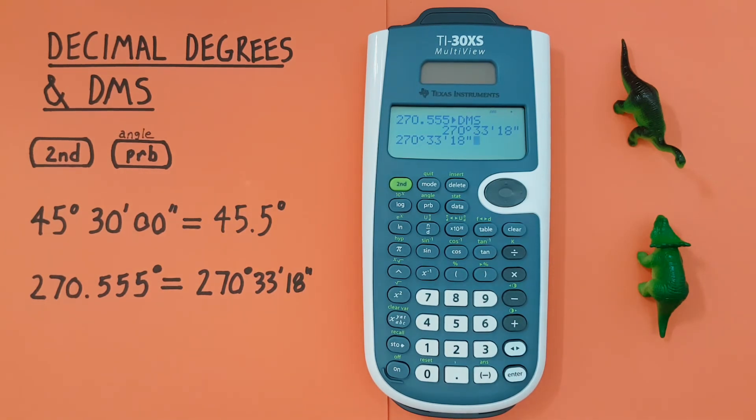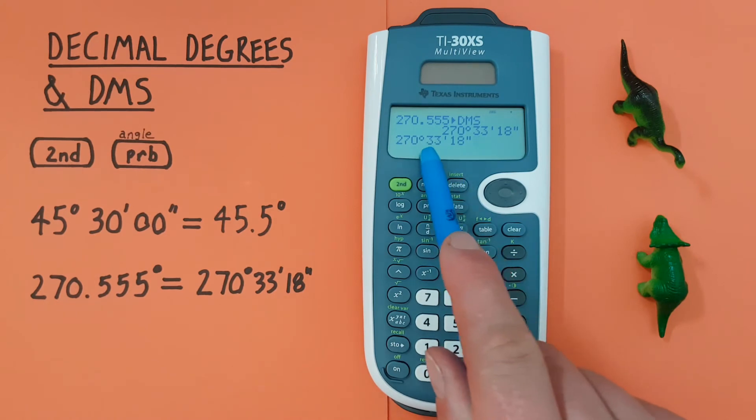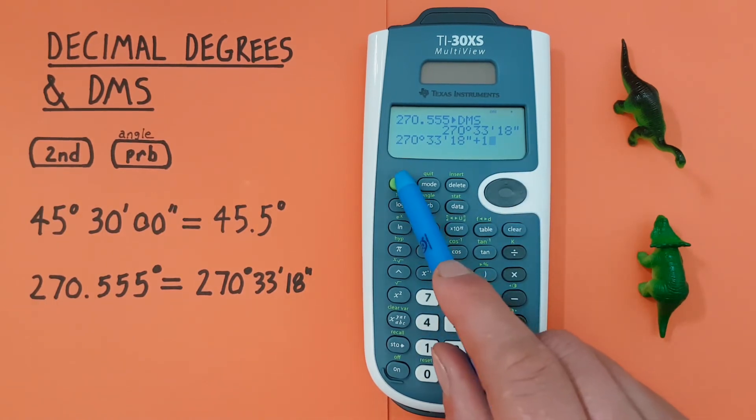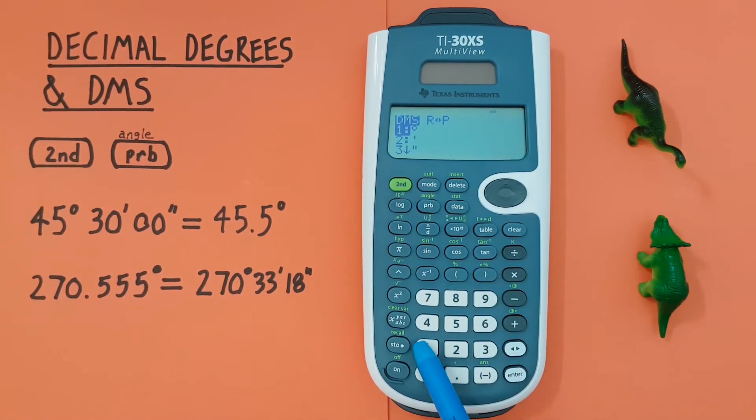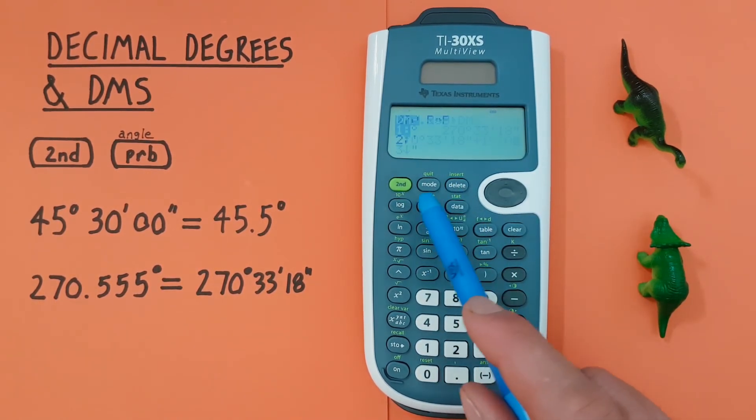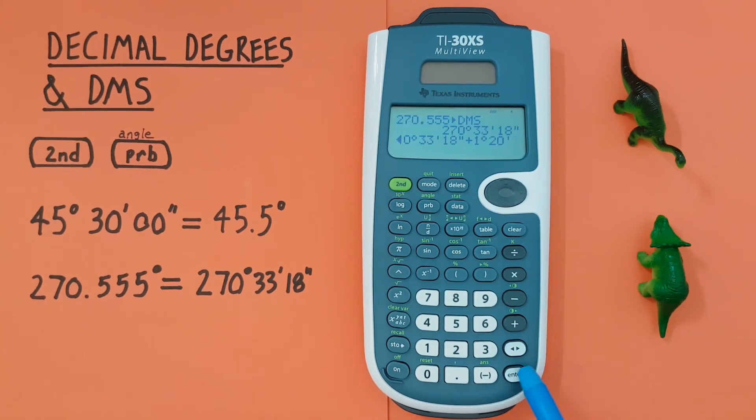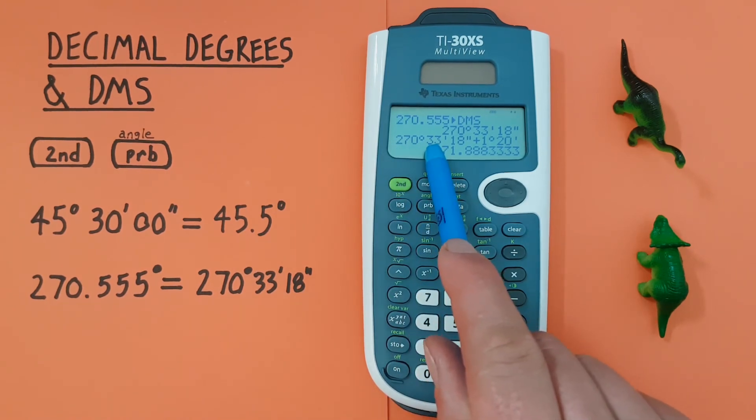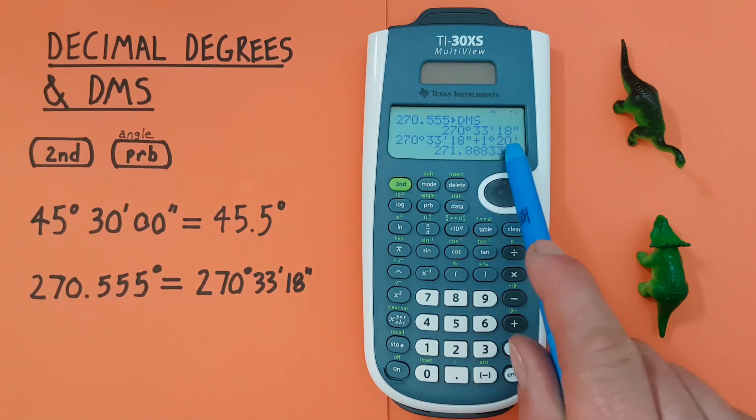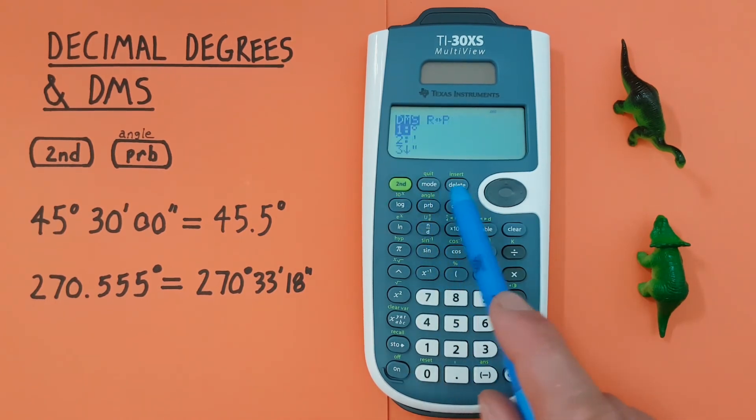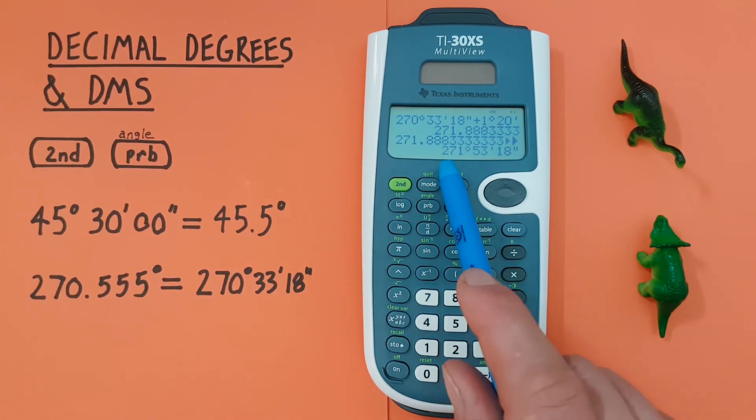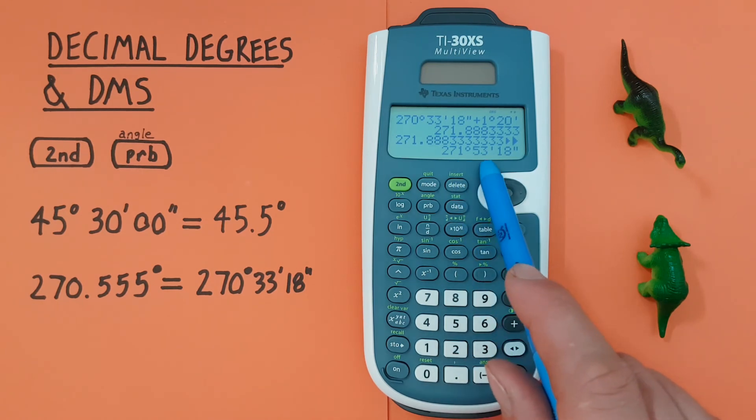You can also do calculations with this. Like let's say we wanted to add one degree and 20 minutes to this. Well you just add then enter our degrees which is one, one degree 20 minutes, press enter and we see our 270 degrees 33 minutes 18 seconds plus one degree 20 minutes has converted to decimal degrees. And again if you want that back in degrees minutes seconds all we have to do is choose the sixth option here and see that we get 271 degrees 53 minutes 18 seconds.